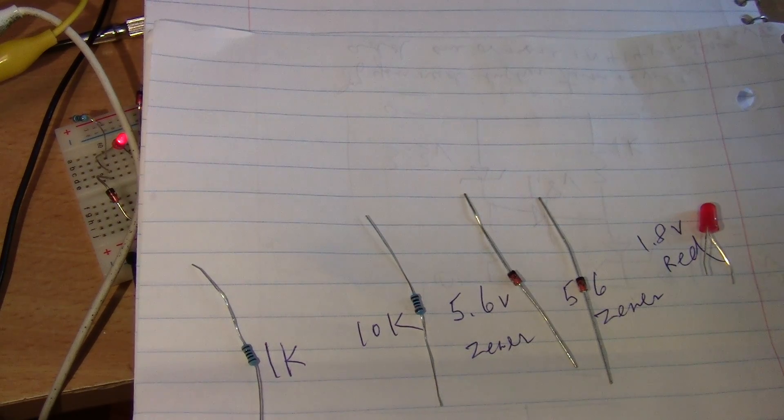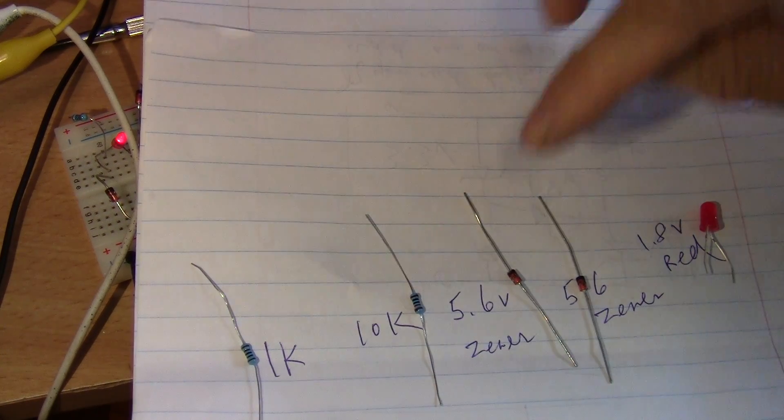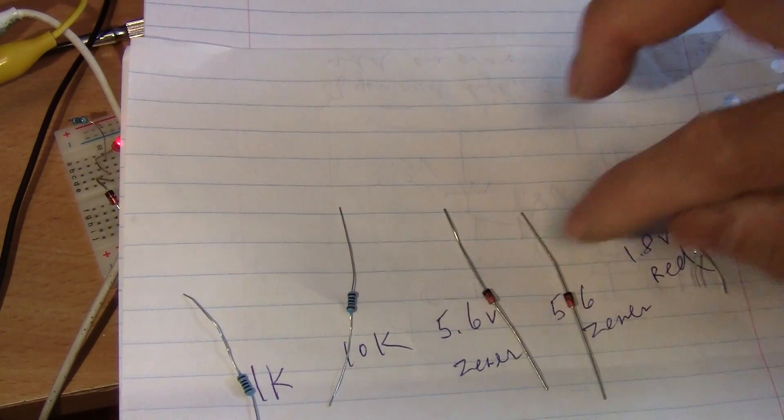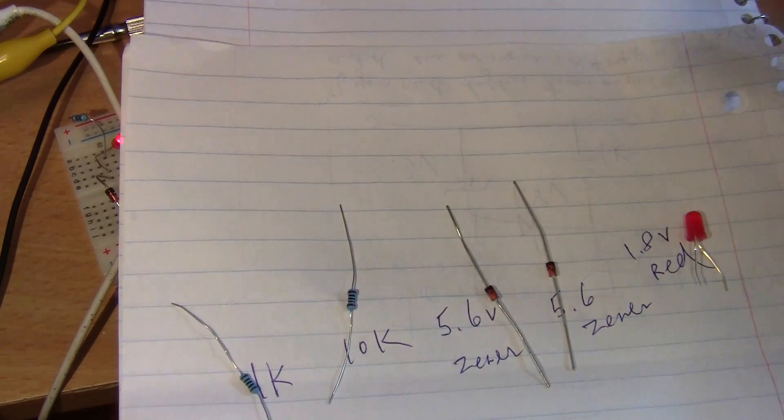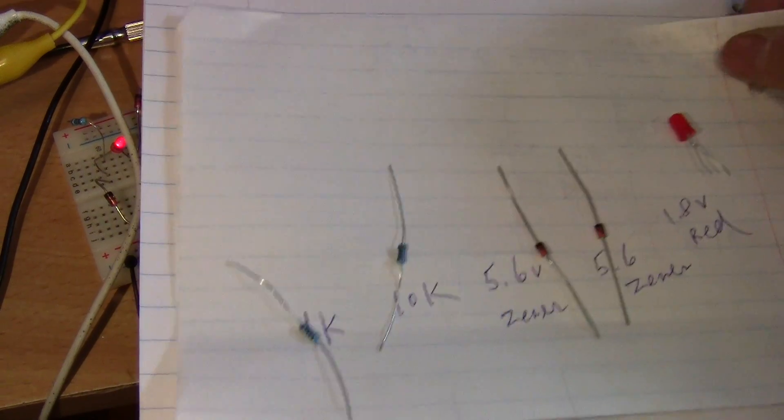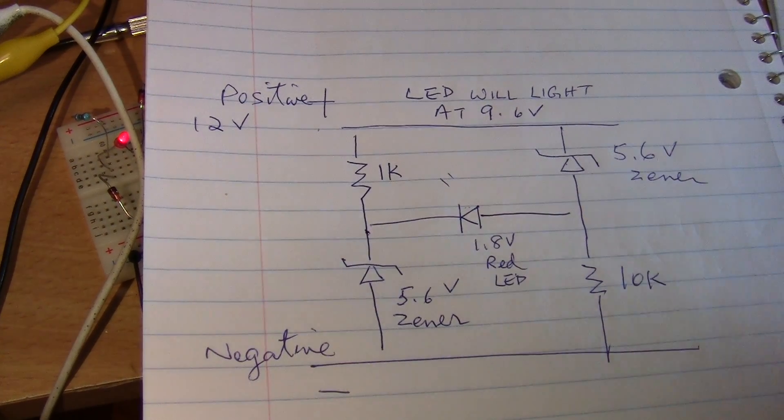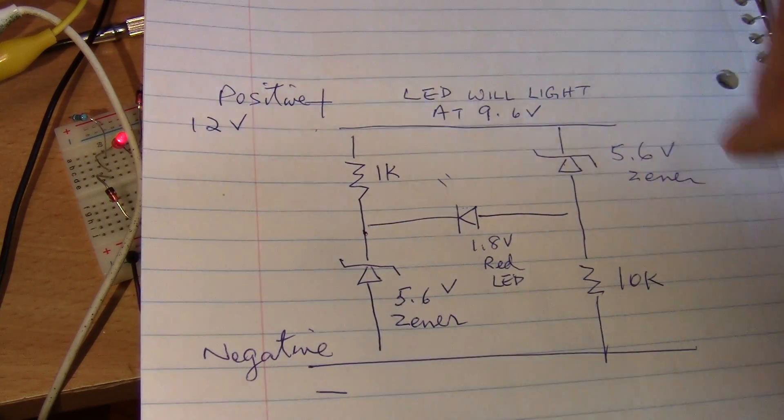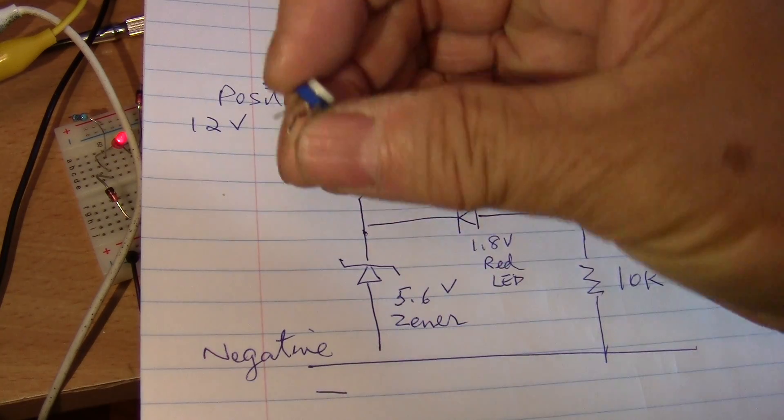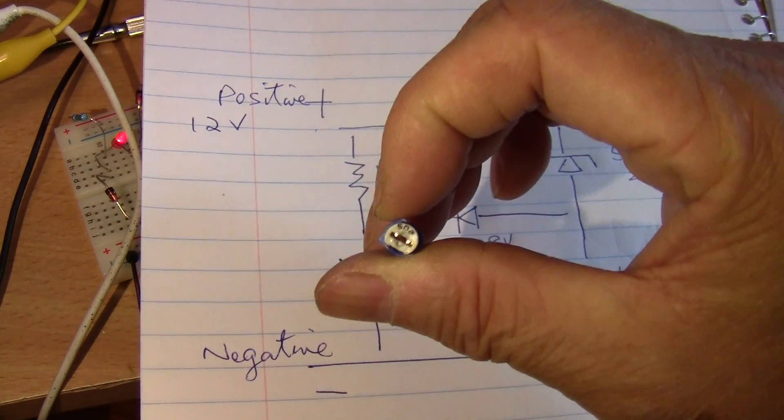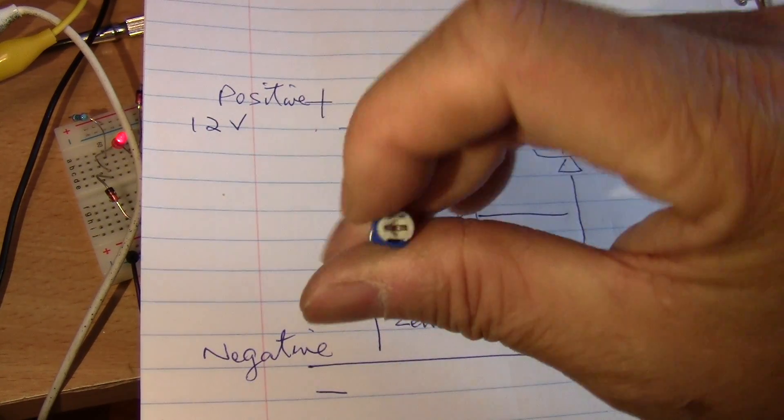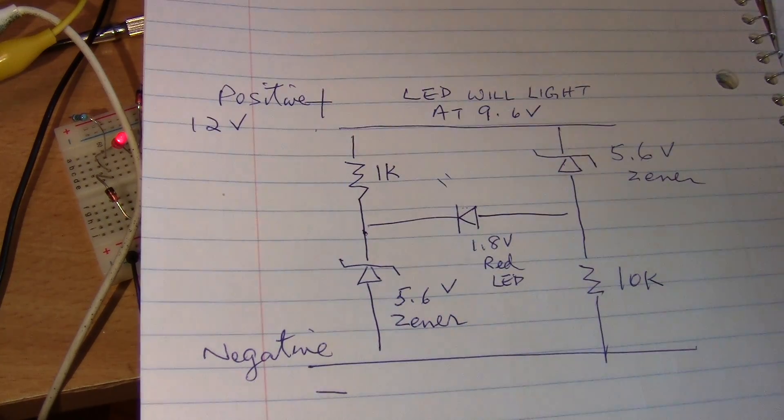For this low light indicator, you need only five components. One 1K resistor, one 10K, and two 5.6V zener diodes, and one 1.8V LED, red LED. And the circuit is like this. You might have to change the values a little bit. I was playing around with a variable resistor. This is like a 5K. And after changing it, the resistance, I came up with a 1K and a 10K.